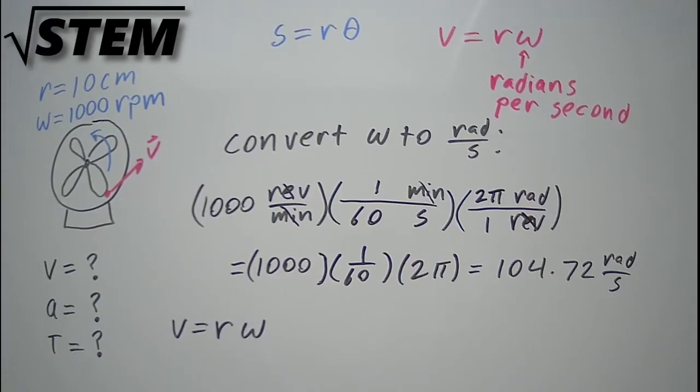Now we can find the velocity equal to the radius in meters times our angular velocity in radians per second is equal to 10.47 meters per second.